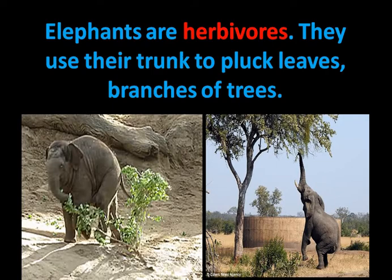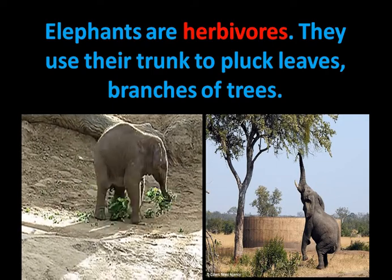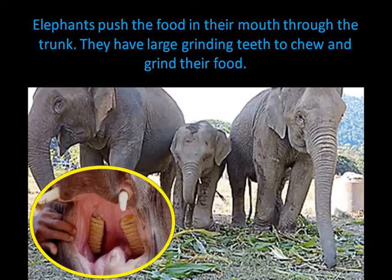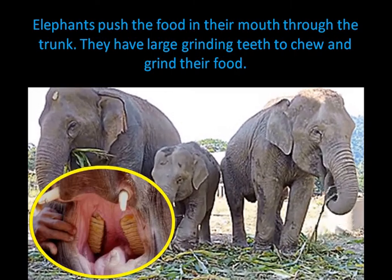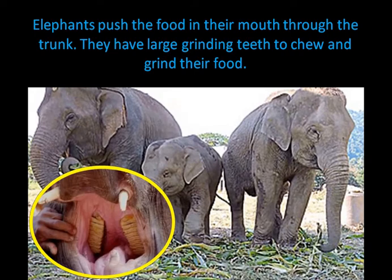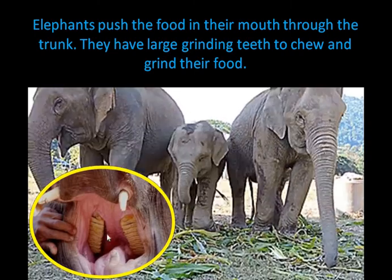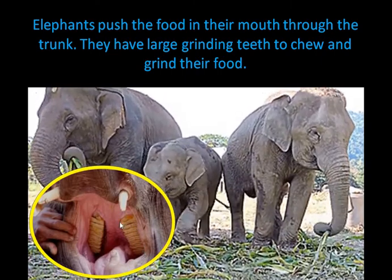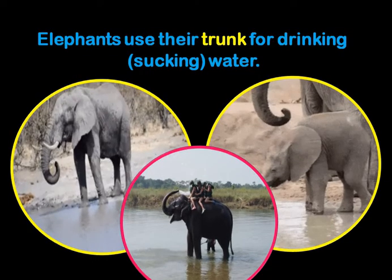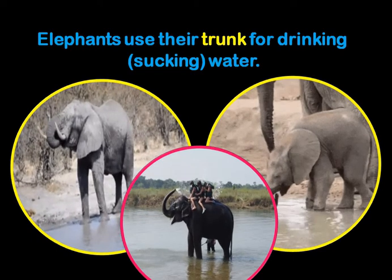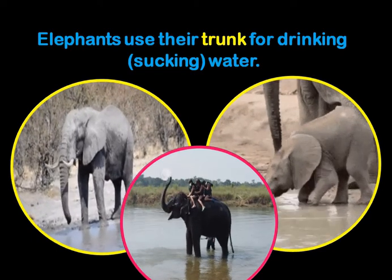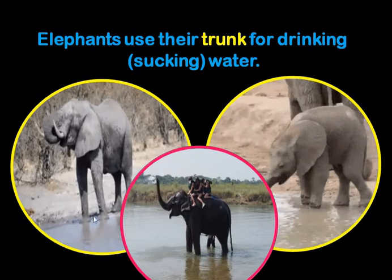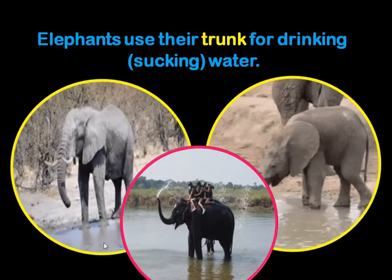Also, elephants are herbivorous animals. Elephants use their trunk to pluck the leaves or the branches of the tree and also to push the food inside their mouth. They have flat teeth inside their mouth to grind and chew the food. Elephants also use their trunk for drinking or sucking water — sometimes they are so playful they just keep on throwing water on their back.